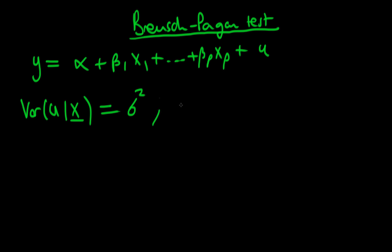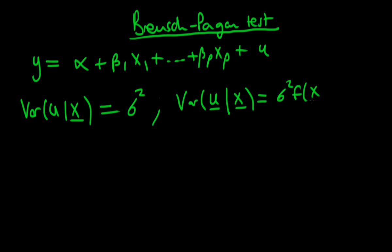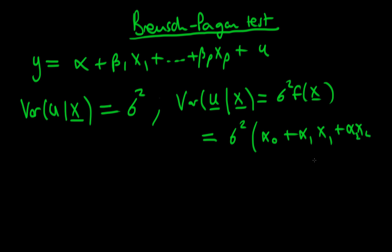Contrast this with the situation if we had heteroskedastic errors. In this context, the variance of u given a vector of my variables x would be equal to sigma squared times some function of my independent variables. We might think that one particular function of my independent variables might be, let's say, alpha_0 plus alpha_1 x_1 plus alpha_2 times x_2.